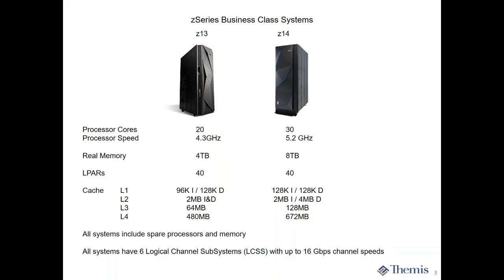You can see processor cores: 20 to 30, speeds, memories — four terabytes versus eight terabytes. That's actual real memory, folks, compared to what you might be used to. I have a server behind me that runs Linux and it's 96 gigabytes, or could be 256 gig. So we're talking many terabytes on the mainframe.